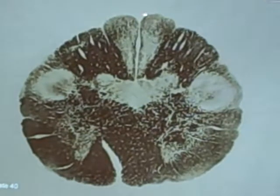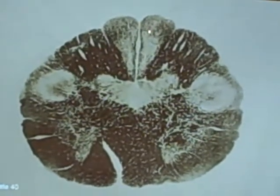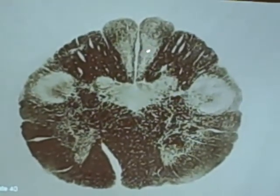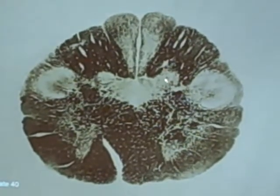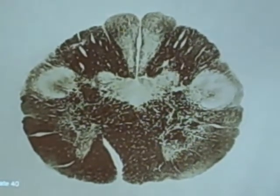Back here we were used to seeing fasciculus gracilis and cuneatus. Here they are. This is fasciculus gracilis synapsing here in the nucleus — so this is the nucleus gracilis. Fasciculus gracilis, nucleus gracilis. Fasciculus cuneatus, nucleus cuneatus.